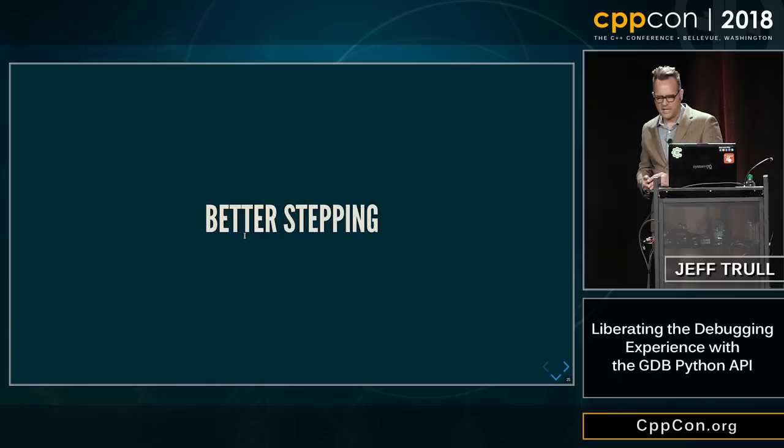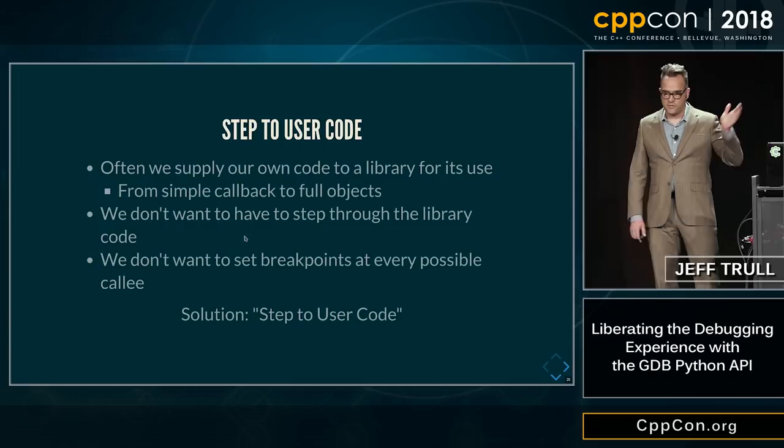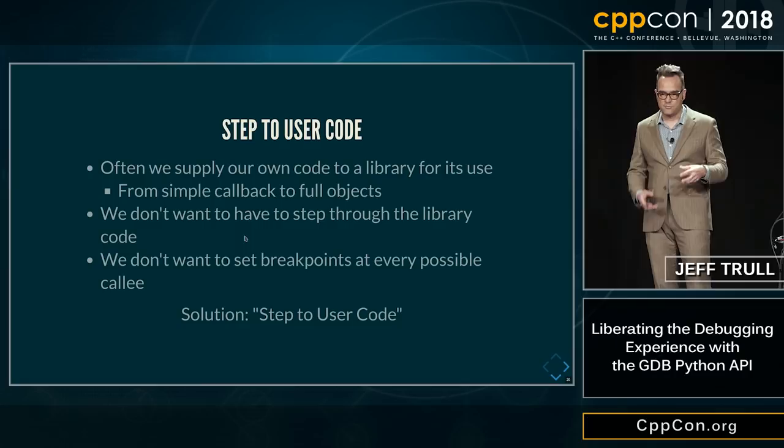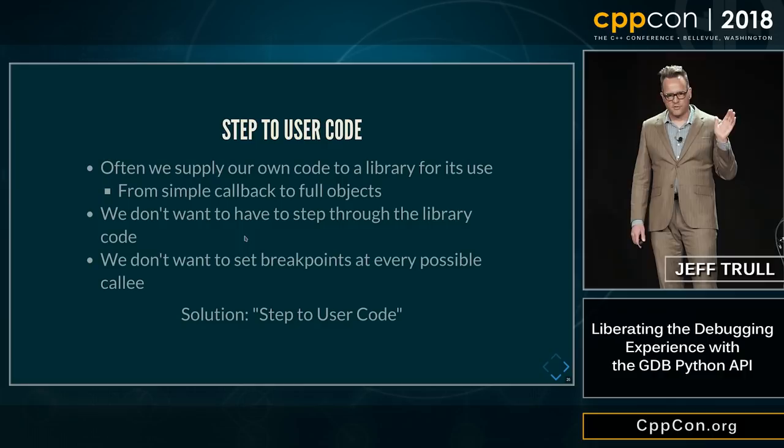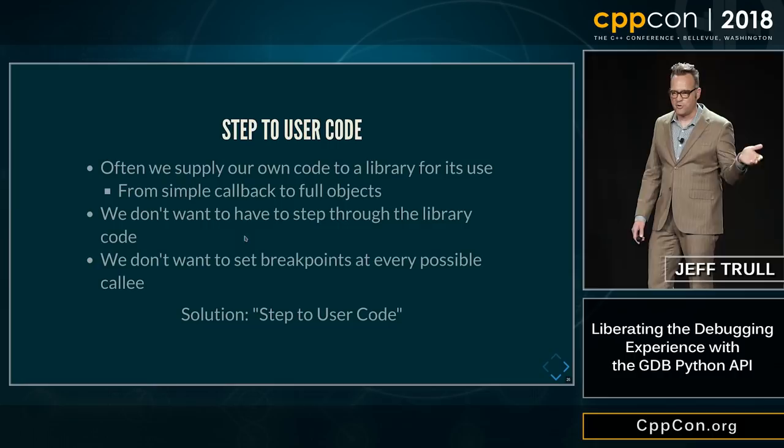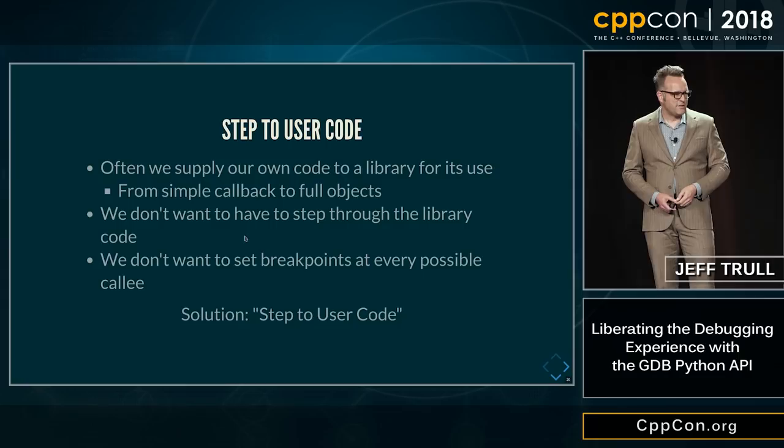Next application: better stepping. Often we supply our own code to a library in order for it to use. In order to see our code and figure out what might be wrong with it, we have to step through a whole lot of library code to get there. We can set a breakpoint in the middle of our lambda or visitor or whatever we're supplying to the algorithm, but it's really painful and we might miss stuff. So we want to have some way of doing that automatically.